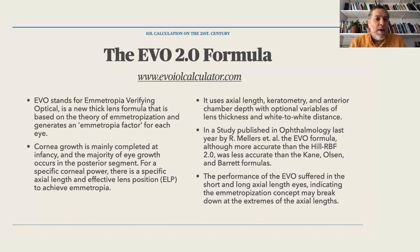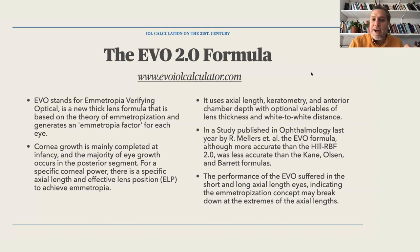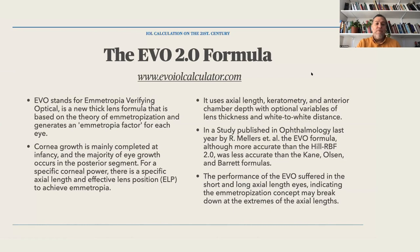The EVO 2.0 formula is another free online formula. EVO stands for Emmetropia Verifying Optical. It's a new thick-lens formula based on the theory of emetropization — it generates an emmetropia factor for each eye, making it a custom formula. It is based on the concept that corneal growth is mainly complete in infancy, and most eye growth occurs in the posterior segment. For a specific corneal power, there is a specific axial length and ELP to achieve emmetropia.